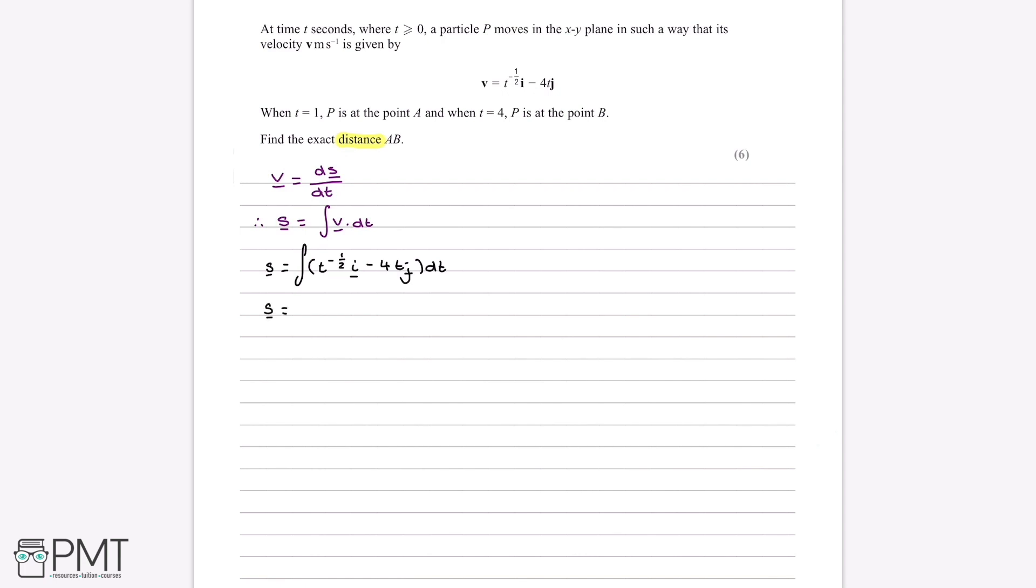First of all, if we start off with t to the power of minus a half i, when we integrate, we add 1 to the power, so add 1 to minus a half gives us a half, and then we divide the number in front of the t by this, which is just 1. So 1 divided by a half is 2. So we put this now as the coefficient of t, and keep the power as the previous one plus 1, and then we just add the i. The i's and the j's don't change when we integrate and differentiate vectors.